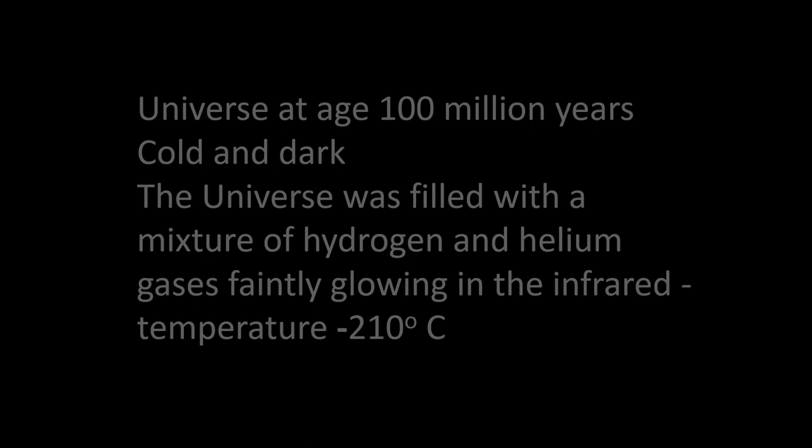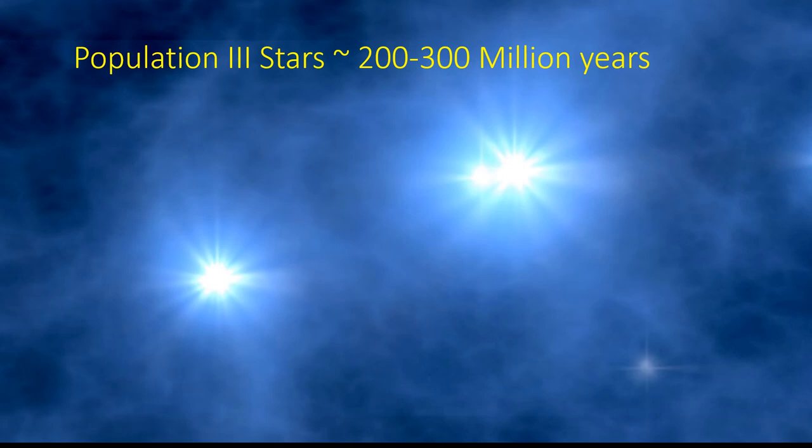As the universe continued to expand and cool, matter began clumping together. When it was about 200-300 million years old, large clumps of matter existed which were around 100 to 300 times the mass of the sun. These clumps of matter contracted, getting hotter and hotter, and as they did so, eventually nuclear reactions started and the first stars were born.